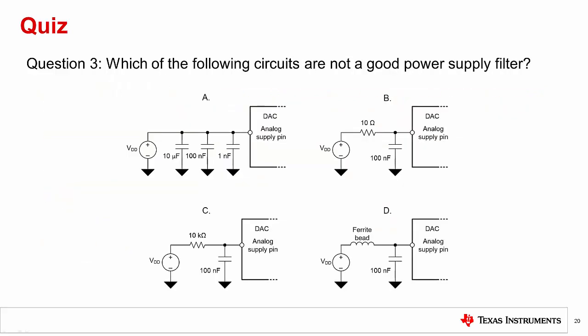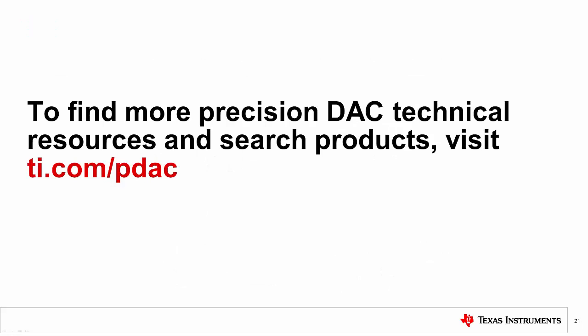Question 3: Which of the following is not a good power supply filter? The answer is C. While this circuit will act as a low-pass filter and remove noise, the high resistor value could cause a significant voltage drop on the pin as current flows into the device, and this lower supply voltage could potentially cause brownout or reset events. That concludes this TI Precision Lab about digital feed-through in Precision DACs. Please find more Precision DAC technical resources and search our products by visiting ti.com/pdac. Thank you for watching.